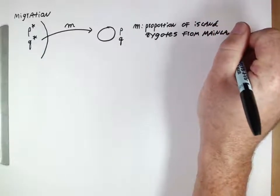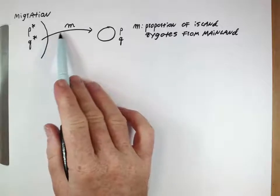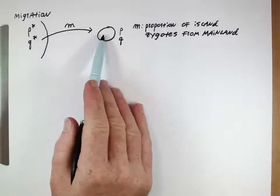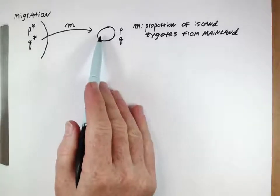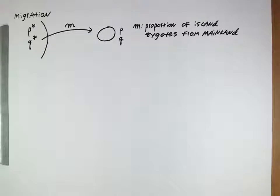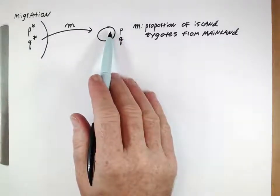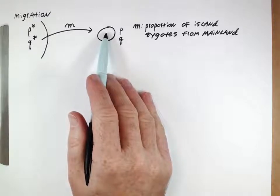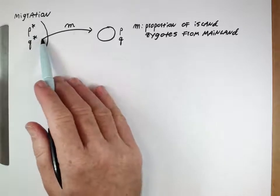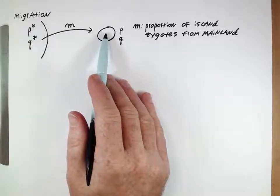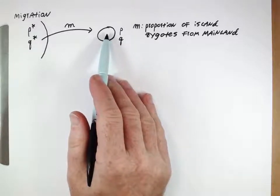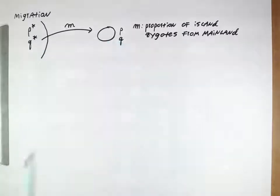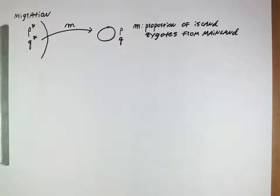When we think about the migration rate, we're not thinking about the number of individuals leaving the mainland — we're thinking more about the individuals arriving on the island and how many they are in comparison to the island population. Island zygotes can arise in two ways: if a pregnant female comes across and has offspring, each individual is 100% genetically from the mainland. On the other hand, if a male or female migrates alone and mates with an island individual, their offspring will be one-half mainland, one-half island. So the migration rate M is the proportion of island zygotes overall that are from the mainland, whether whole individuals or these hybrid individuals.